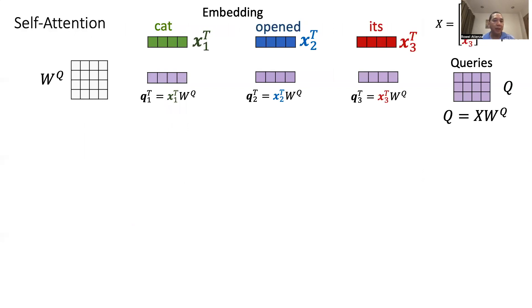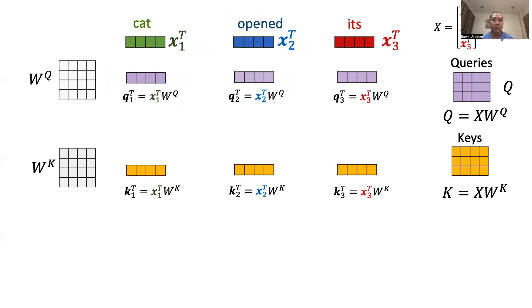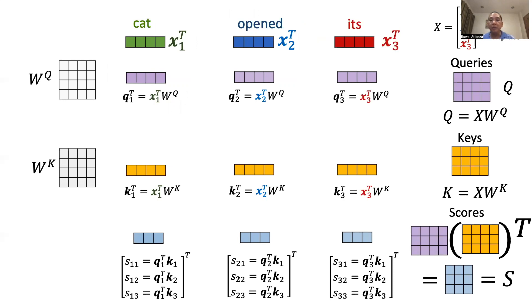With the attention equation already in place, we can now perform the necessary operations. Q, K, and V have their own respective weight tensors. For Q, this is multiplied by the input features to generate tensor Q — the same for K and V. The dot product of tensors Q and K is then computed. The result is shown here as tensor S, which is then normalized by the square root of the feature dimension Dk.